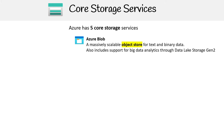The first is Azure Blob. This is a massively scalable object store for text and binary data, and it also includes big data analytics through Data Lake Storage Gen 2. Azure Blob is really great because you don't have to think about the file system — you just upload files and they're treated like objects.